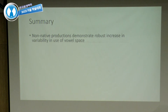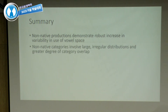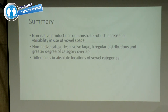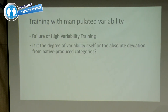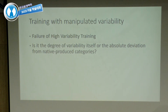Non-native productions demonstrate a robust increase in variability in the vowel space — larger irregular distributions, greater category overlap, and differences in the absolute locations of vowel categories. We then introduced another training paradigm where we systematically manipulated the variability participants were exposed to. We asked: is the problem the degree of variability itself, or the absolute deviation from natively produced categories?